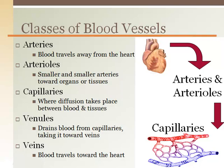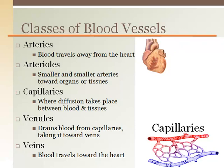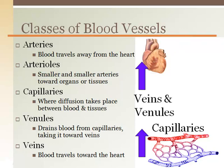Capillaries are the only place that diffusion of nutrients and waste takes place. Venules are small veins that drain the capillary beds, carrying away waste and other exchanged molecules from the cells and tissues. Venules collect into larger and larger veins, returning blood to the right atrium. Veins are where blood travels toward the heart. The largest veins are the superior and inferior vena cava.